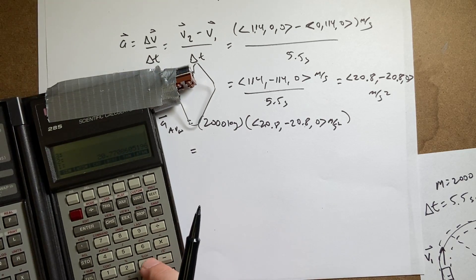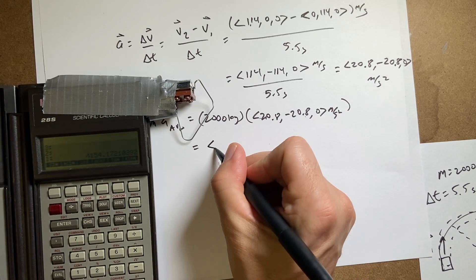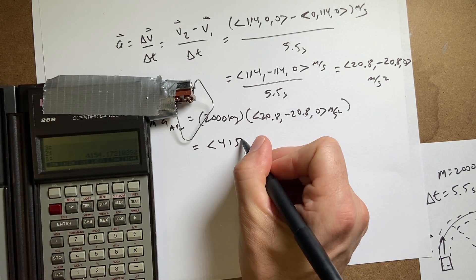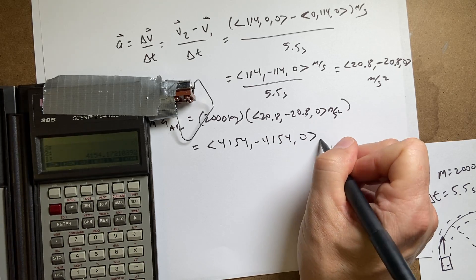So I'm going to say 2,000 times. So I get 41,540, negative 41,540, 0 newtons.